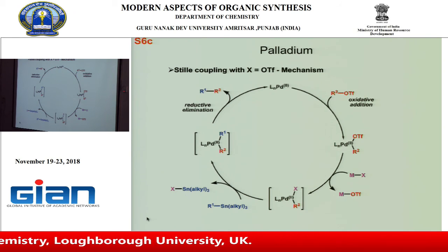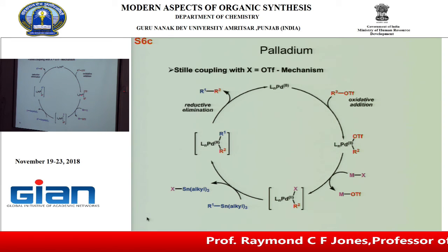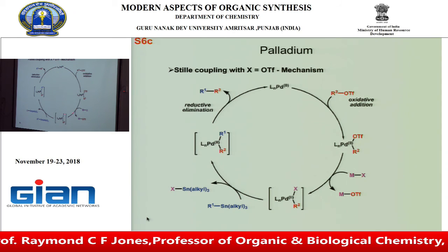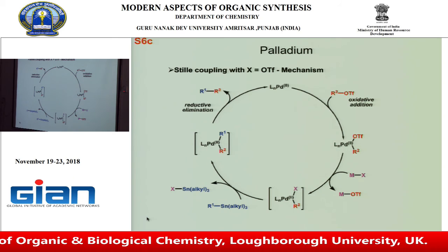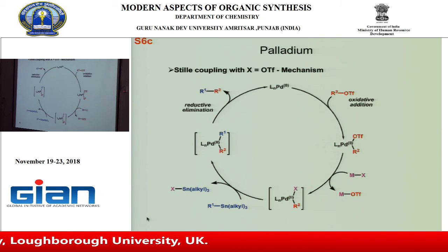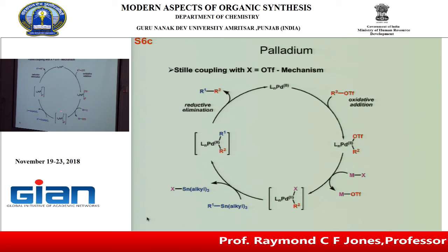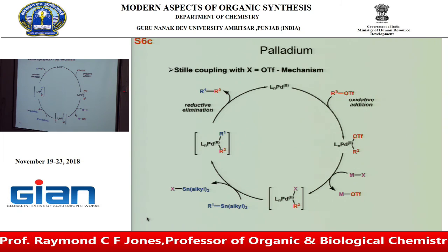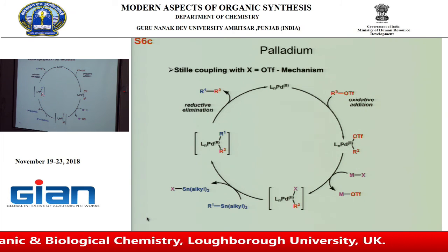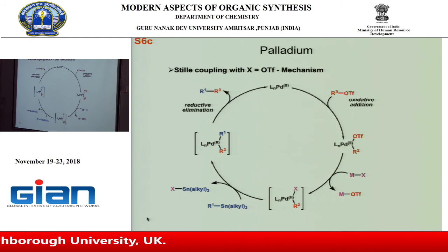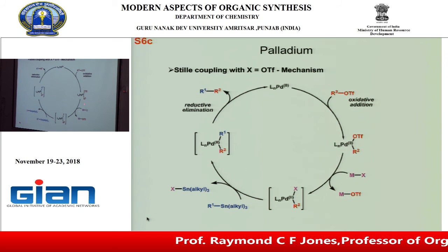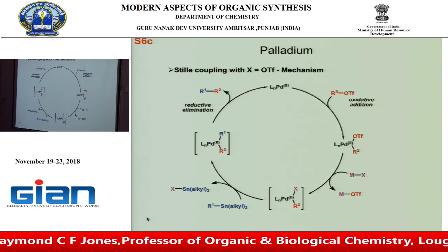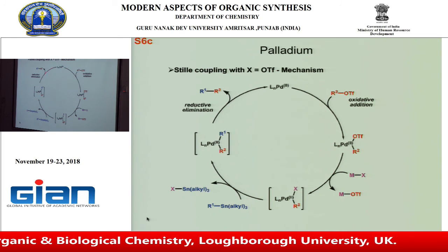If the leaving group is a triflate rather than a halide, the cycle is slightly more complex: after oxidative addition, the triflate is exchanged for a halide by adding a metal halide salt such as lithium chloride. This gives a complex identical to what you'd have if the leaving group had been a halide from the start. From there, transmetallation proceeds as before — the group on tin moves to palladium, and the halide ends up on tin — setting up the reductive elimination.